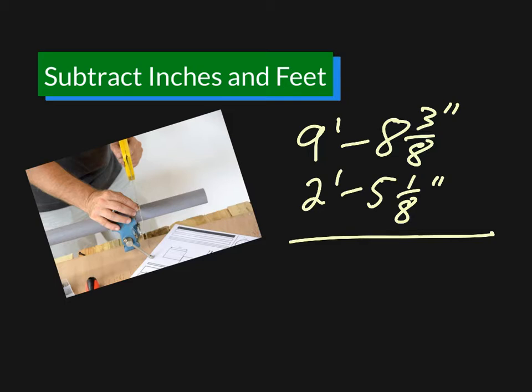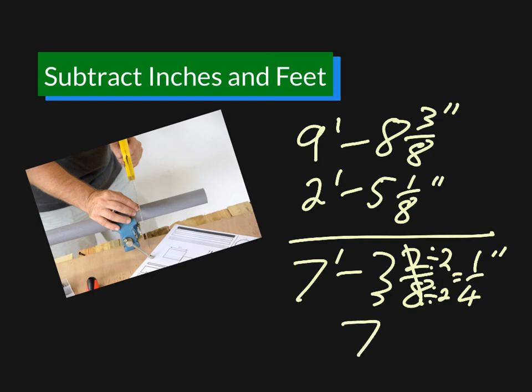Now we're lucky in this example because we already have a common denominator and we don't have to borrow. But you might have to do that. So we've got 3 eighths take away 1 eighth is 2 eighths. 8 take away 5 is 3. 9 take away 2 is 7 feet 3 and 2 eighths inches. But 2 eighths reduces. Divide the top and the bottom by 2 equals 1 quarter. So it's 7 feet 3 and 1 quarter inches.